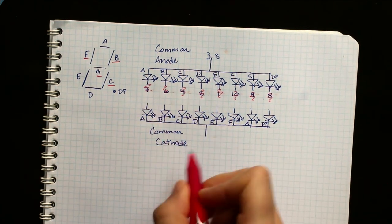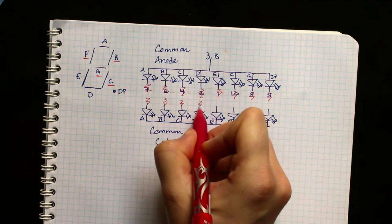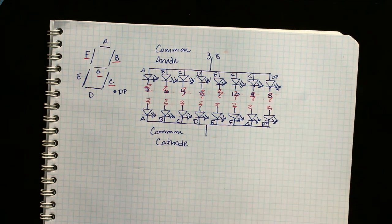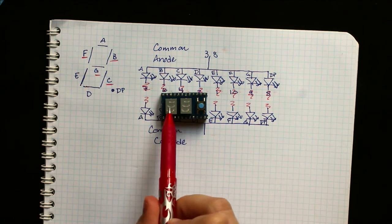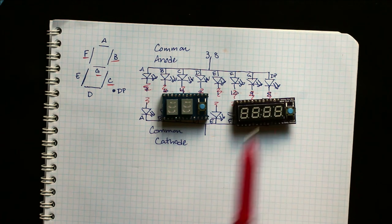And again, for the same principle, when you're working with common cathode, the resistor goes here. Okay, so then let's say we want to make a system where there are two of these, or if you're making a clock, you need four of these.